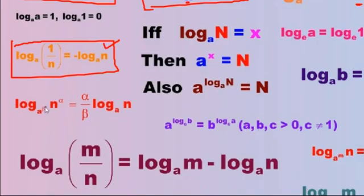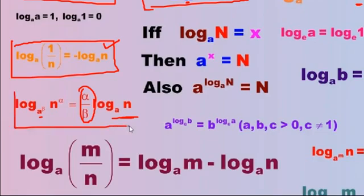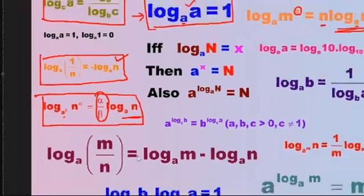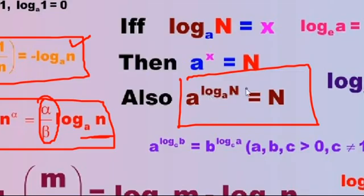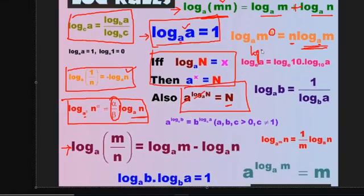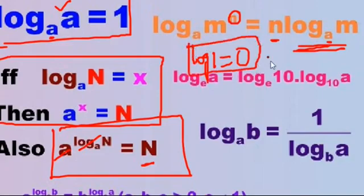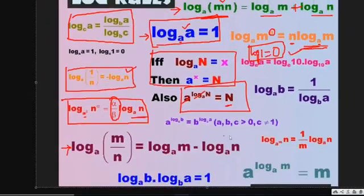Log a^(1/n) base b^m equals (1/m) log a base b — the powers become a ratio alpha by beta. Also, a to the power of log n base a equals n. Finally, log 1 equals 0. If you know these formulas, you can do any problem in logarithm. Logarithm carries high weightage in the polytechnic exam.